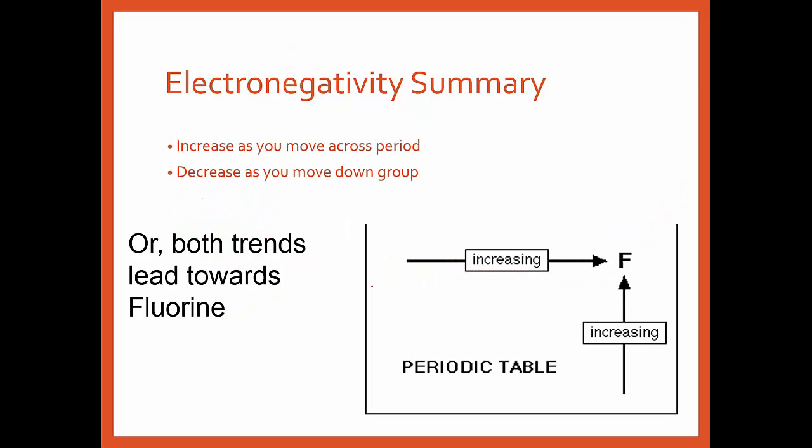If you're going to sum it up, what is it? You see a general increase as you go across the period or a decrease as you go down the group. This increase, decrease - this is what you have to figure out. Some people like to think of everything as in terms of increasing, some like to think of it in terms of decreasing. You've got to figure out what works for you. What I know in electronegativity, I just know that fluorine is the highest. And then everything leads towards fluorine. As long as you remember fluorine is the highest for electronegativity, then this trend should be a little bit easier.